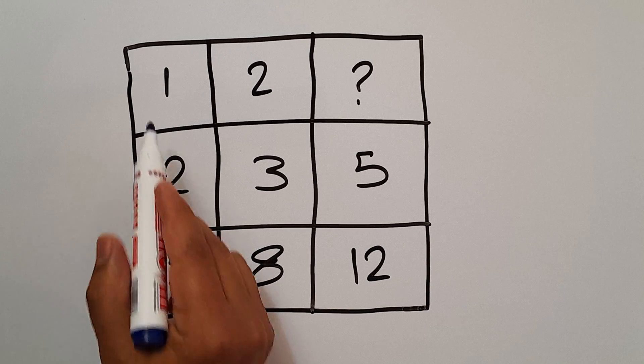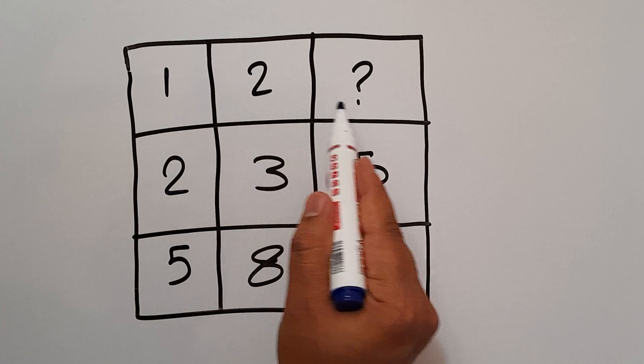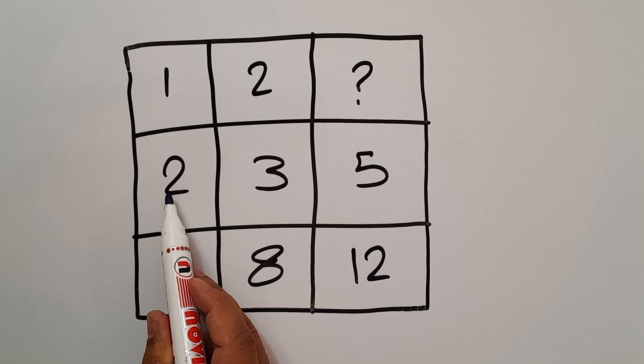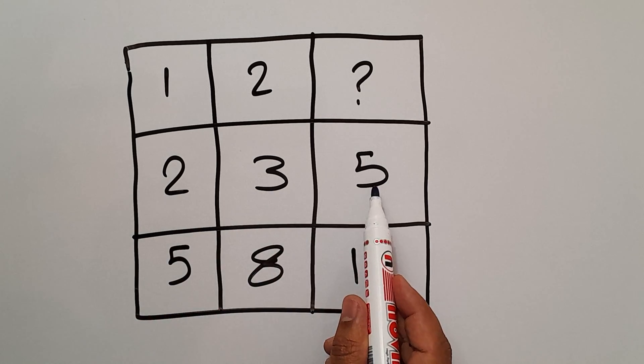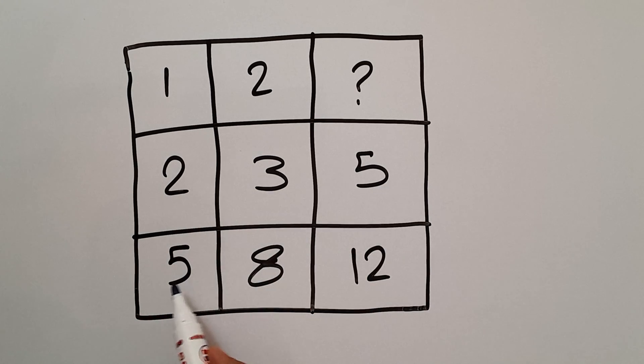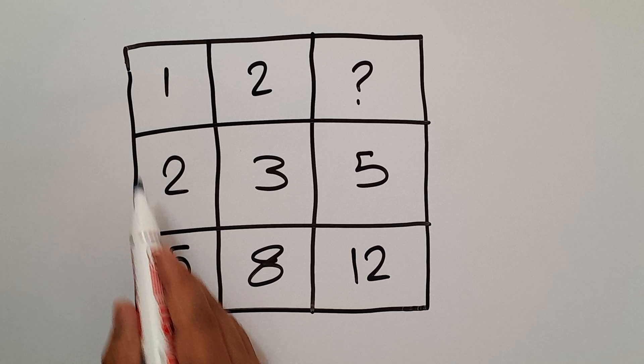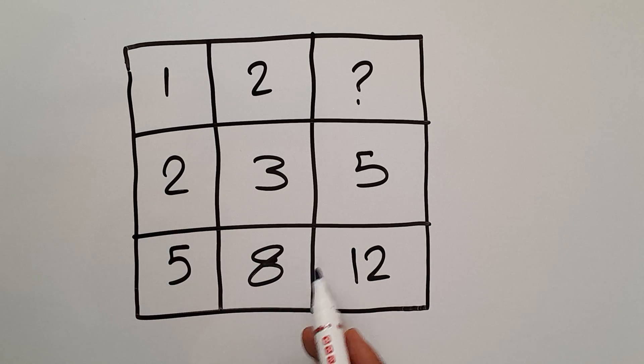The first row has numbers 1, 2, and a question mark. The second row has numbers 2, 3, and 5. And in the third row, we have 5, 8, and 12. Our goal is to find the pattern that exists here and calculate the missing number. Are you ready to solve?